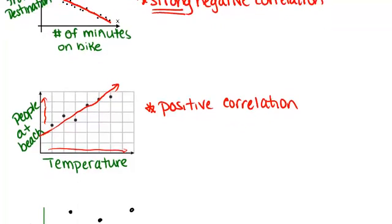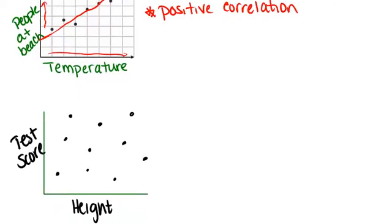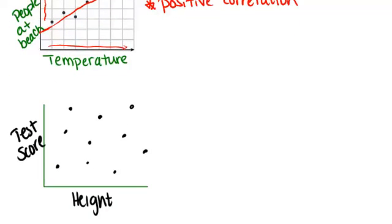But it's possible that sometimes you might pick two variables that have no relationship at all, like height and test score. If you picked everyone in your class and figured out their height and their most recent test score, there's probably not going to be a relationship between those two. So we would say in that case that there's just no correlation at all.